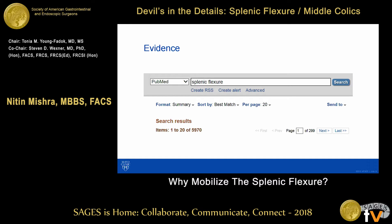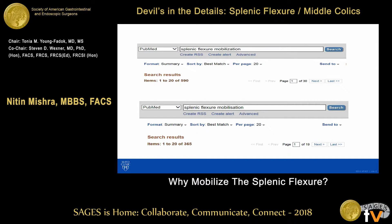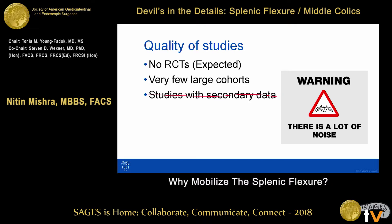If you review the evidence, you get about 6,000 articles on splenic flexure and about 1,000 on splenic flexure mobilization. Once you go through all of them, you end up with about 100 relevant articles. The quality of studies is poor — not because people aren't trying, but because of the nature of the beast. No randomized control trials, very few large cohorts, and a couple of studies with secondary data. I don't think secondary data is the right approach to study this topic unless looking at incidences and trends.